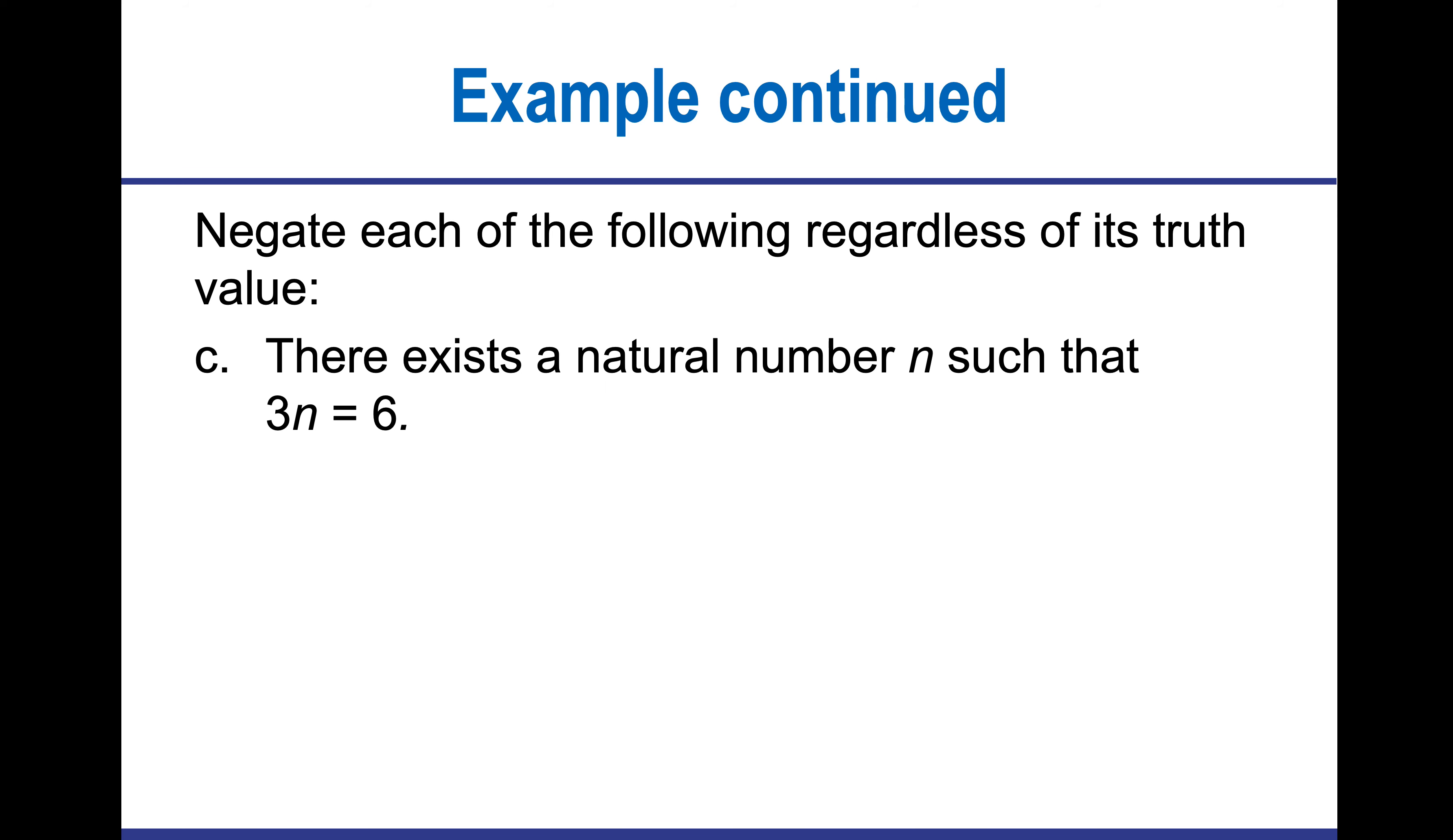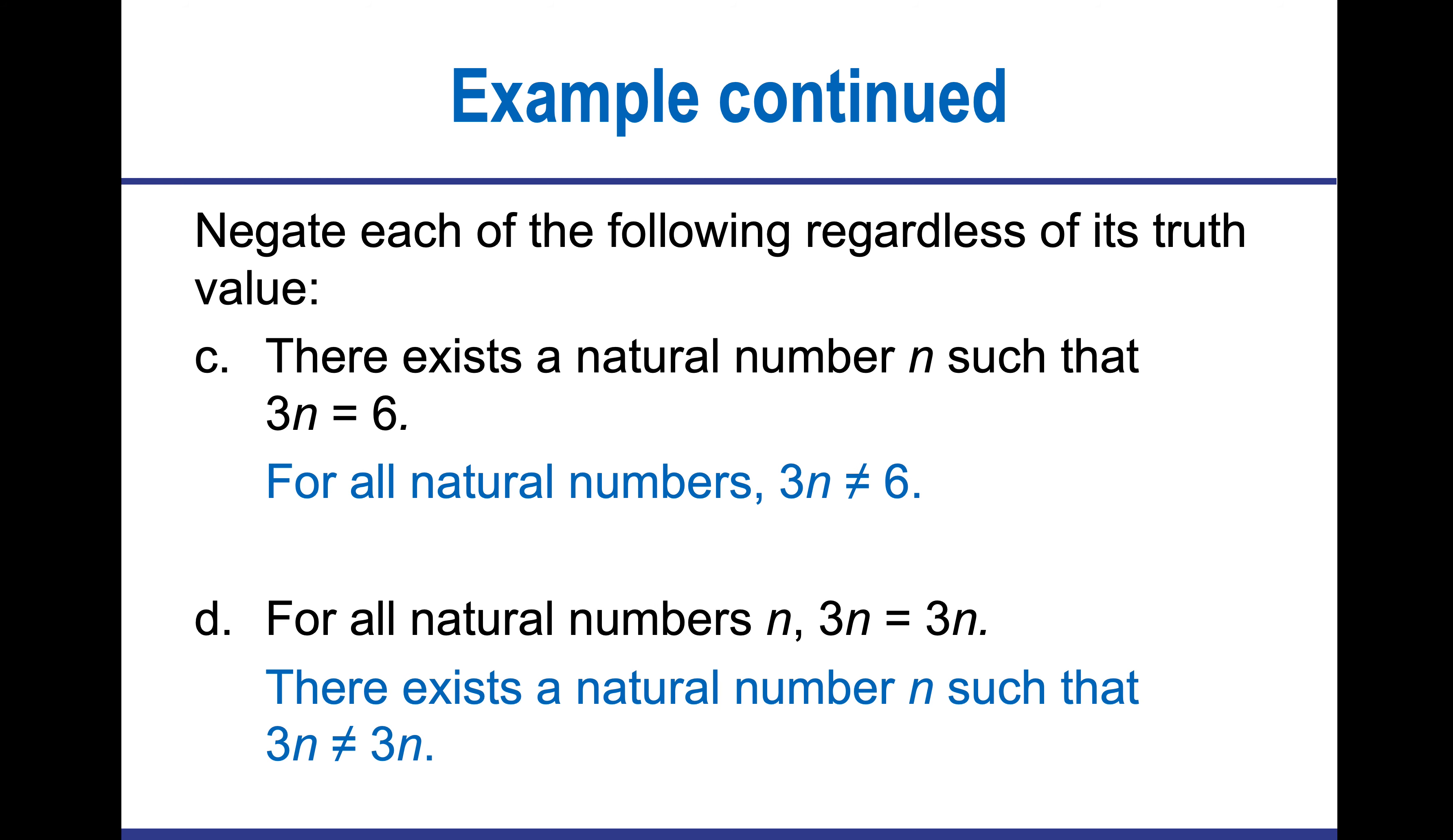If I want to negate this statement, there exists a natural number such that 3n equals 6, then I would say for all natural numbers, three N does not equal six. I'm going from all to some, from some to none. This is affecting the second part of the statement.